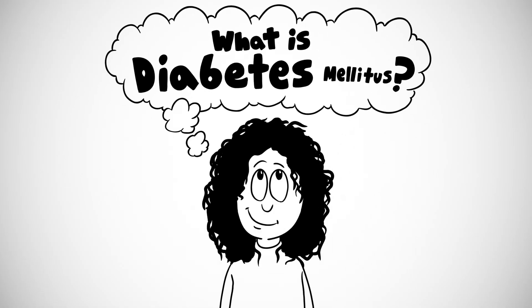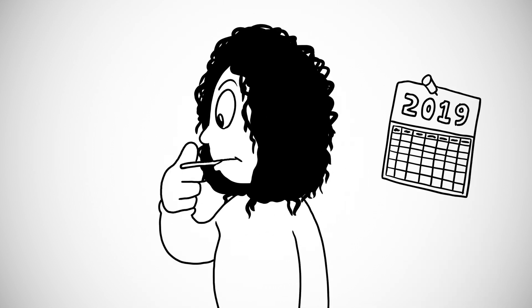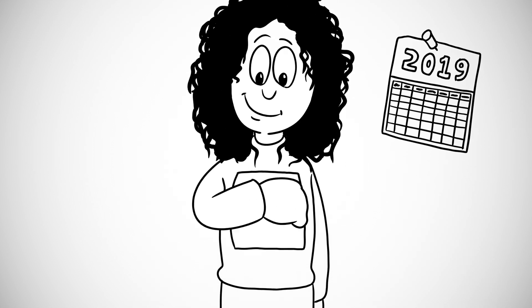Diabetes mellitus, commonly called diabetes, is a chronic disorder where the body has difficulty using sugar for fuel, which causes it to build up in the blood.